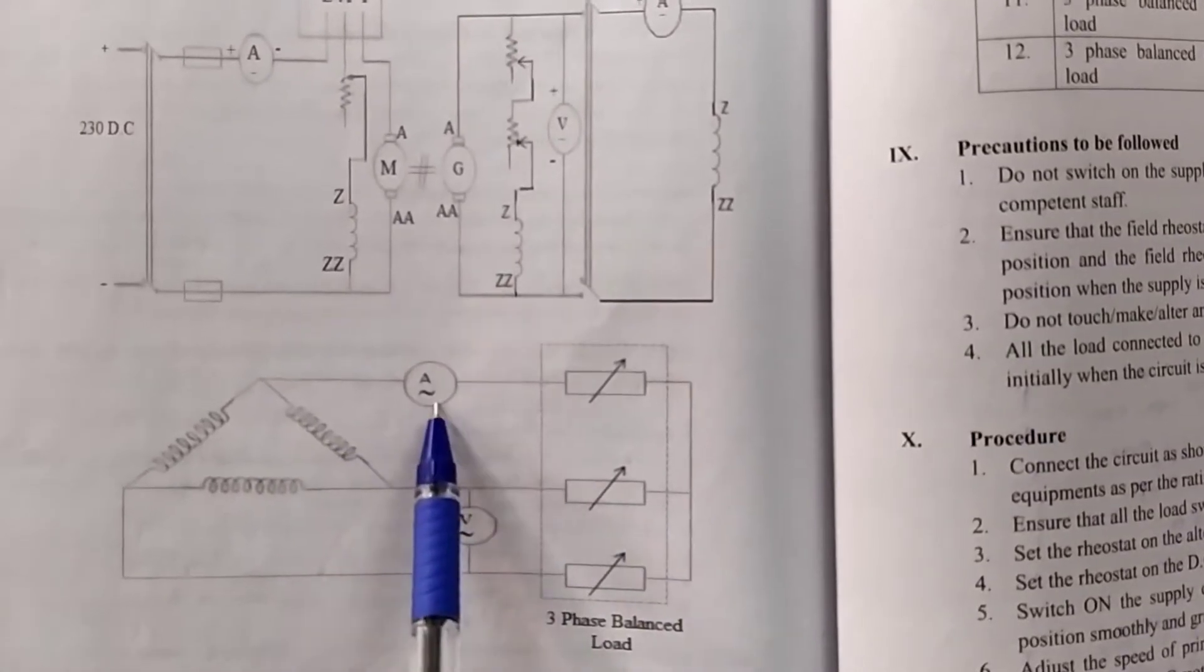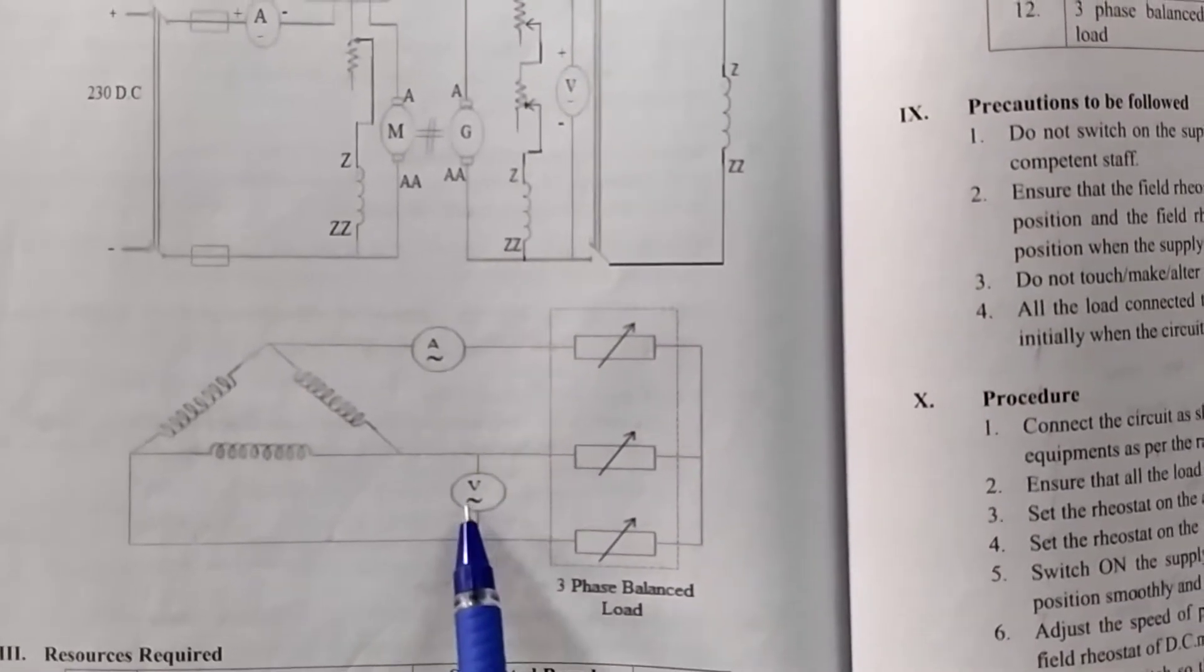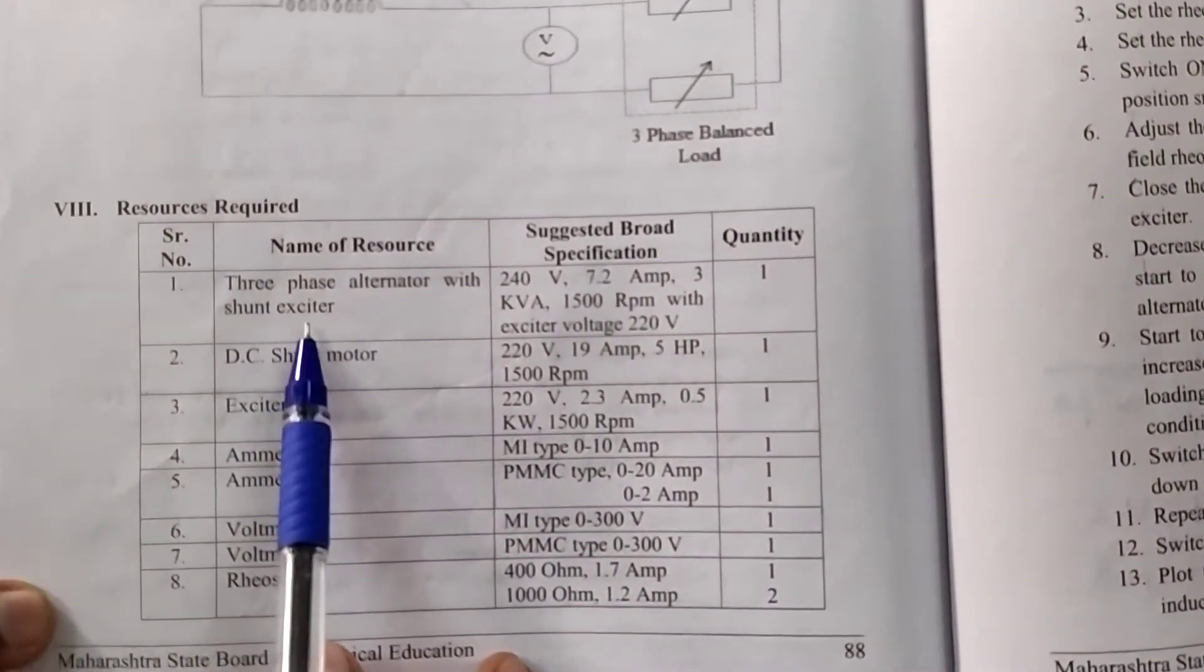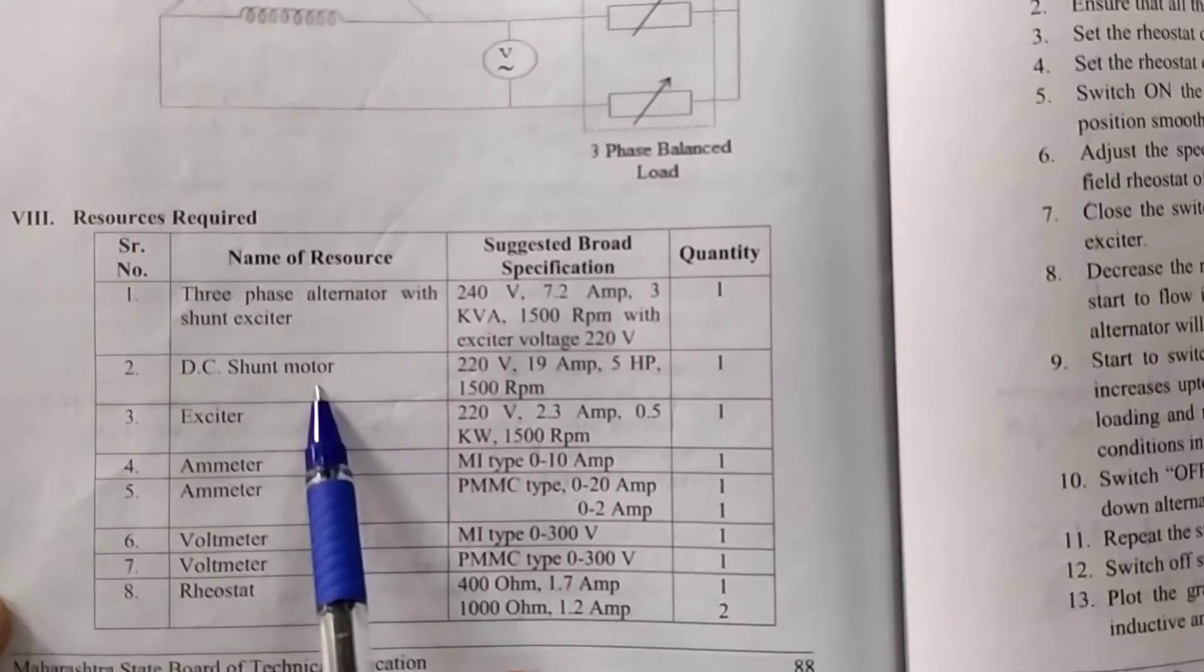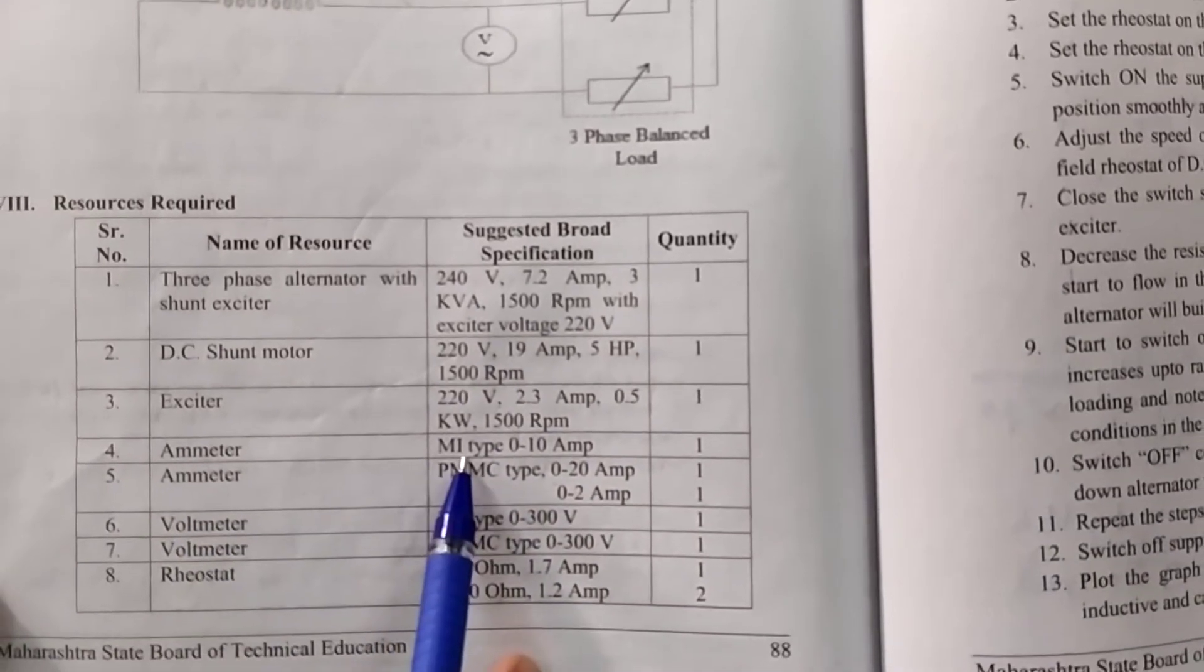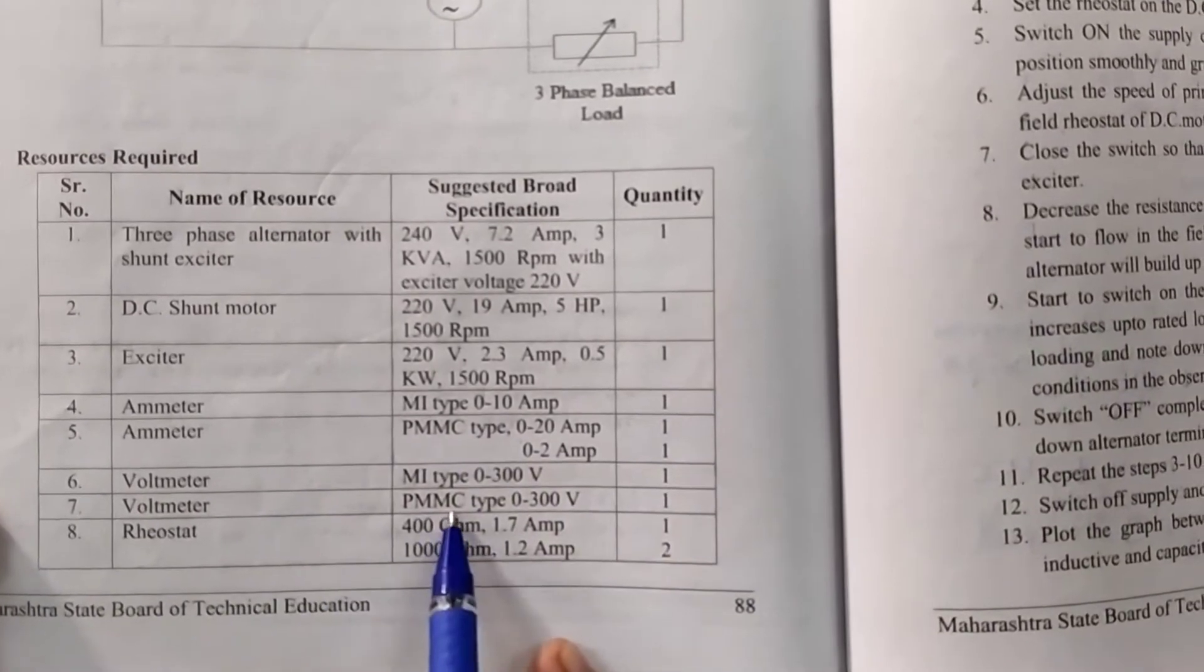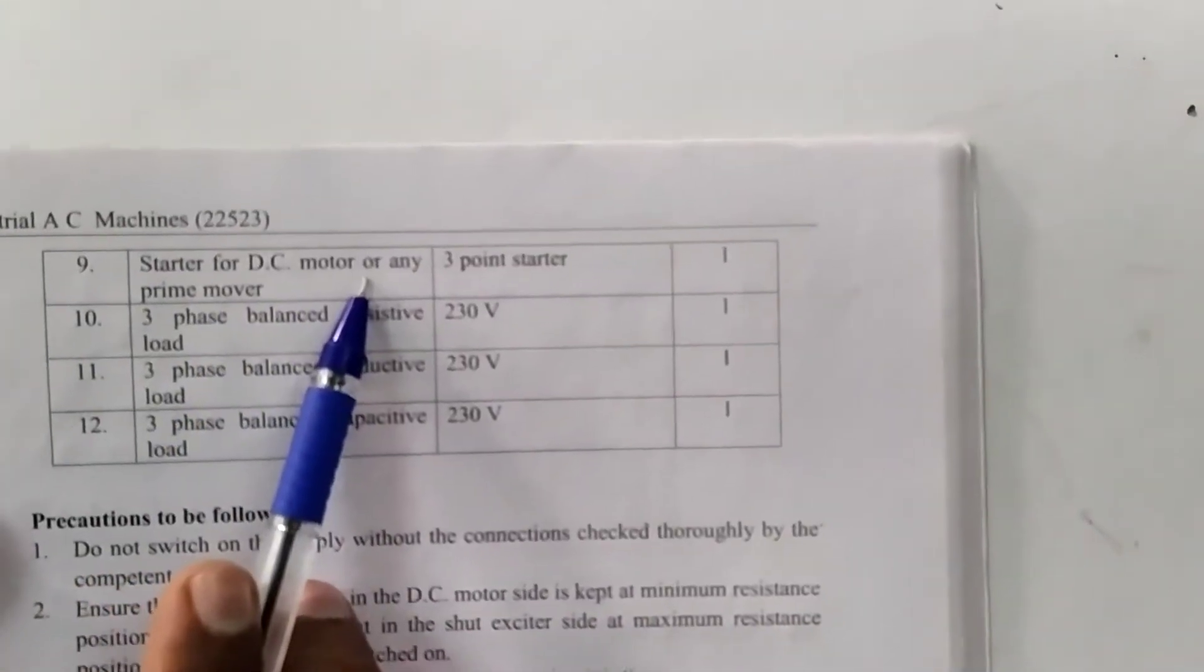At the output of armature load current and load voltage measurement. We are connected ammeter, AC ammeter and AC voltmeter. And a 3 phase balance load is applied at the armature terminal box. Then the resources required, 3 phase alternator with shunt exciter. DC shunt motor for the prime mover purpose. Exciter means separate excitation voltage required. Ammeter MI type 0-10A, ammeter PMMC 0-20A. Voltmeter MI type 0-300 volt and voltmeter PMMC type 0-300 and rheostat.